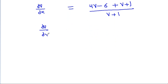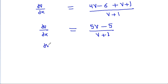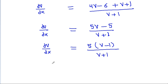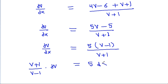So dv/dx = 5(v - 1) / (v + 1), which simplifies to dv/dx = 5(v - 1) / (v - 1). Therefore, (v + 1) / (v - 1) dv = 5 dx.